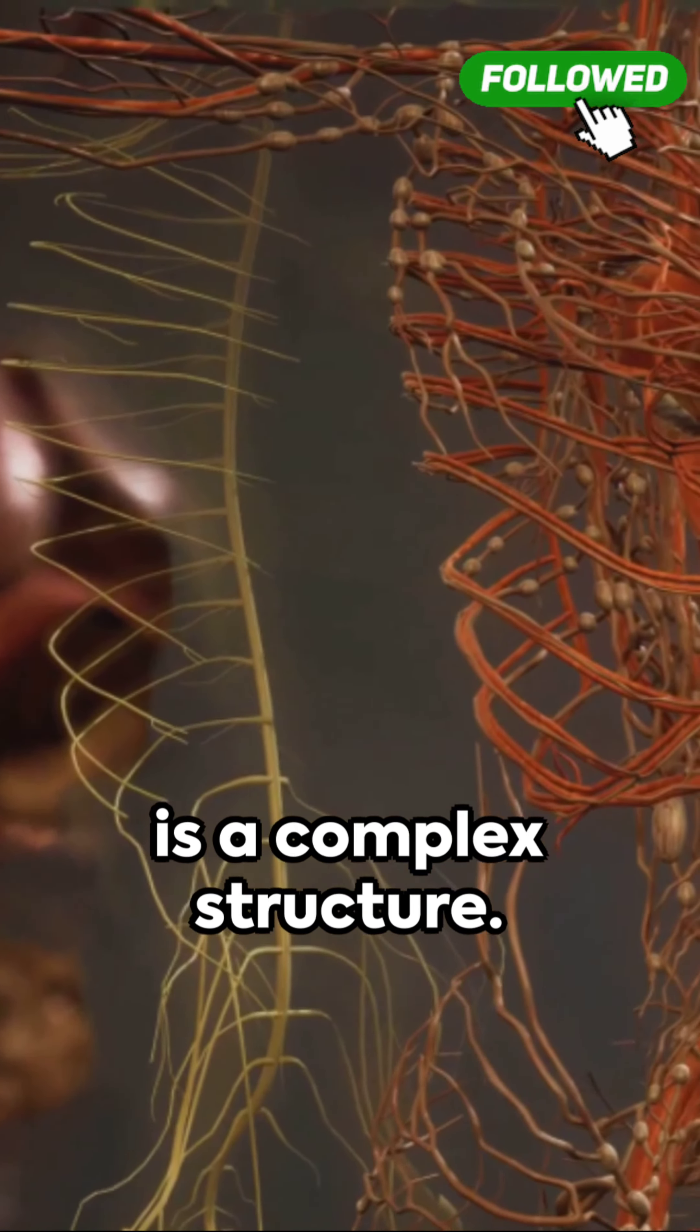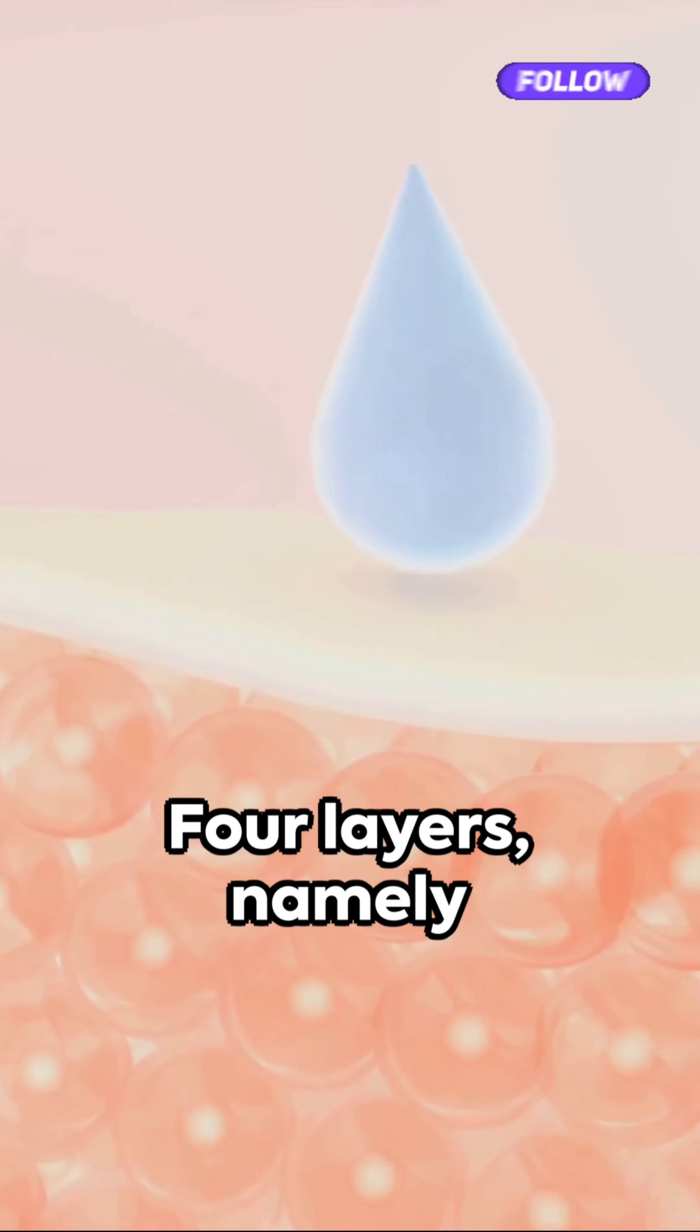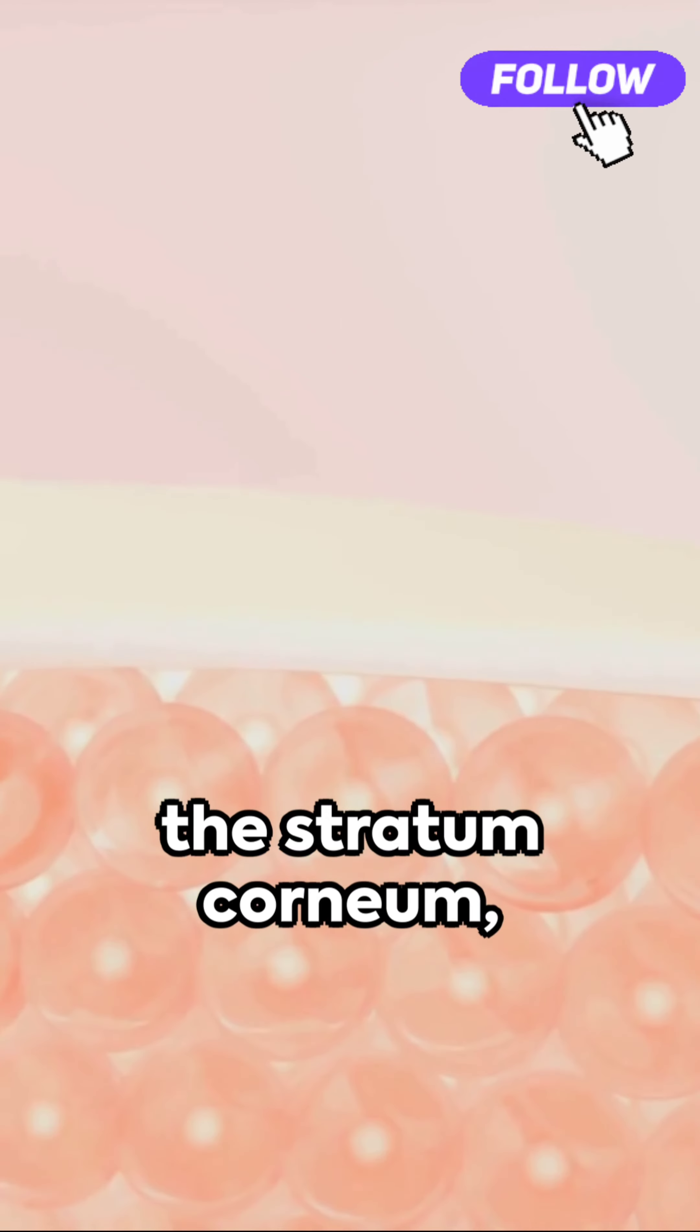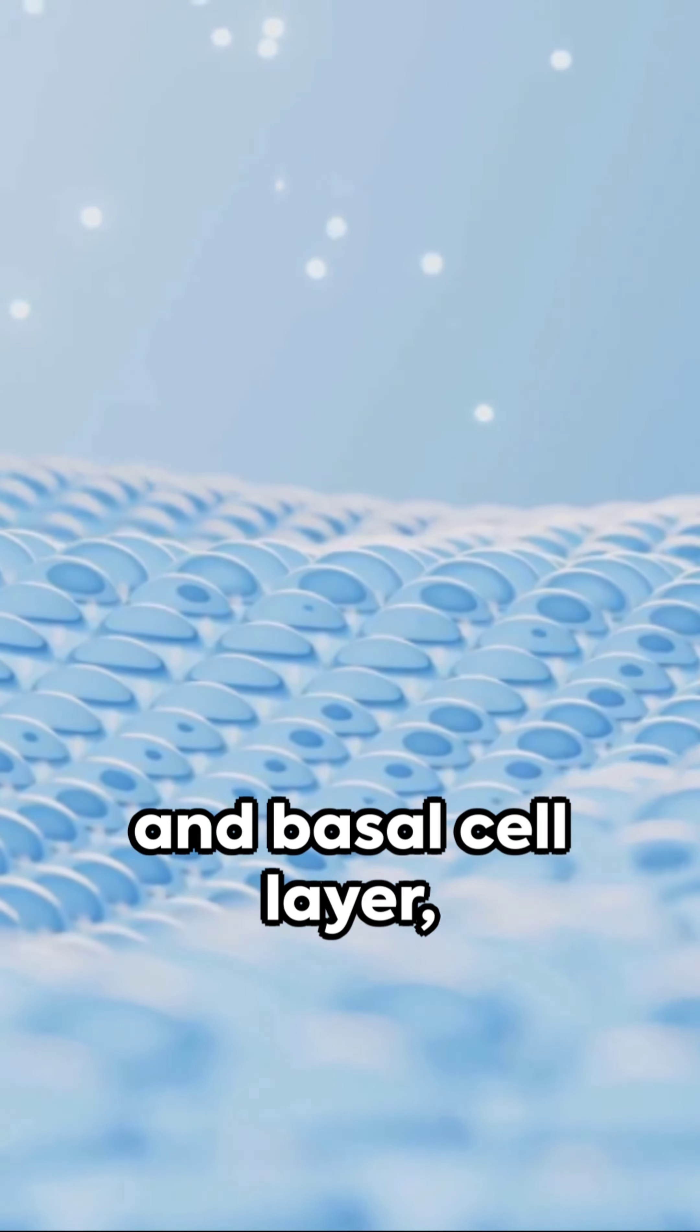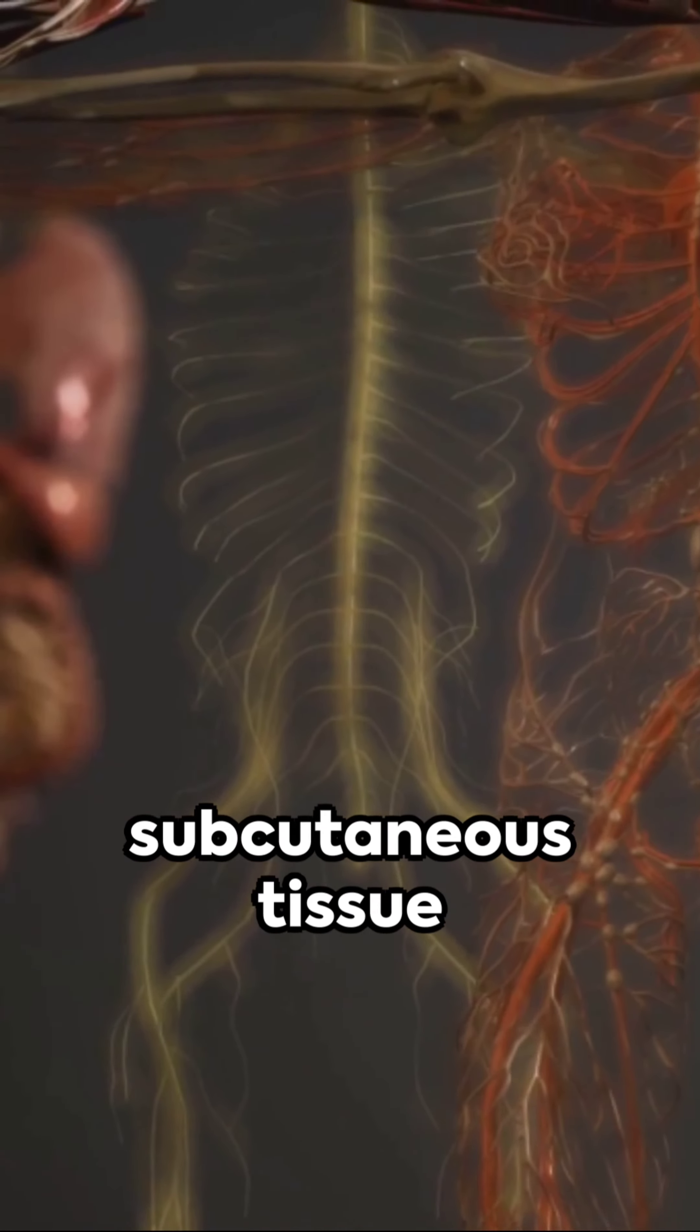Our skin, or epidermis, is a complex structure. Four layers, namely the stratum corneum, granular layer, squamous cell layer, and basal cell layer, make up our skin along with subcutaneous tissue and dermis.